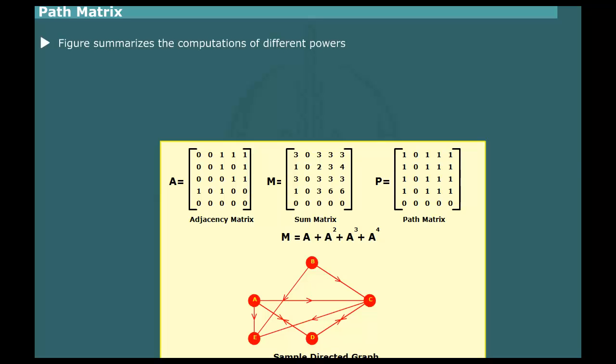Figure summarizes the computations of different powers of the adjacent matrix for a sample graph. By setting non-zero entries to 1, we obtain the path matrix. Observe that second vertex is not reachable from any other vertex. The last vertex is reachable from any other vertex.